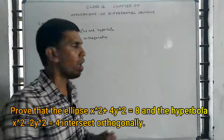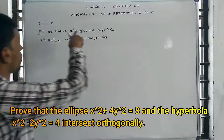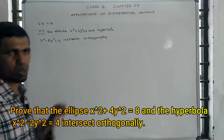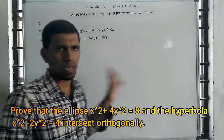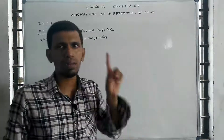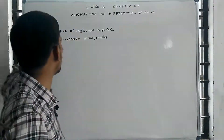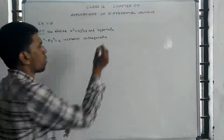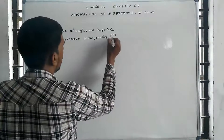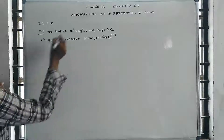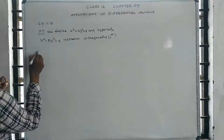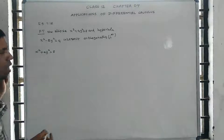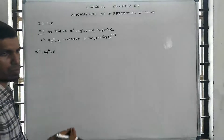This is called a point of intersection. The slope of the first curve is called m1 and the slope of the second curve is called m2. The condition for orthogonality is m1 into m2 equal to minus 1. So, for the first curve x squared plus 4y squared equal to 8, we differentiate.